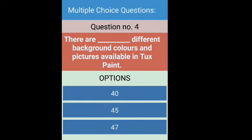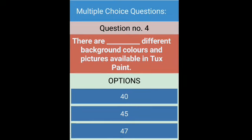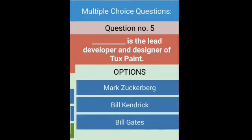The fourth question is: there are dash different background colors and pictures available in Tux Paint. There are 47 different background colors and pictures available in Tux Paint. So the right answer is 47.